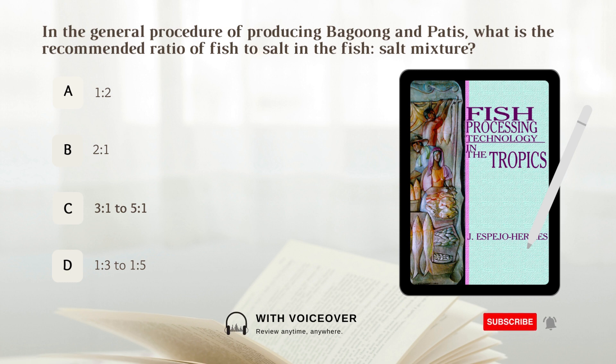The ratio of fish to salt will vary from 3:1 to 5:1, depending on the size of the raw material and the type of salt used.